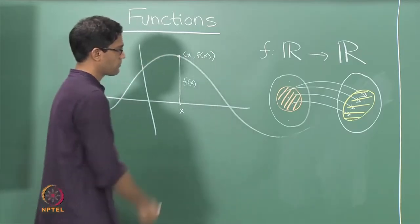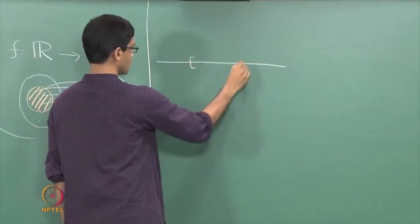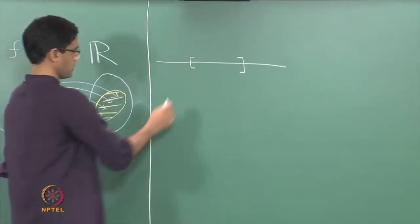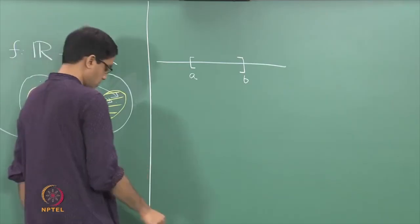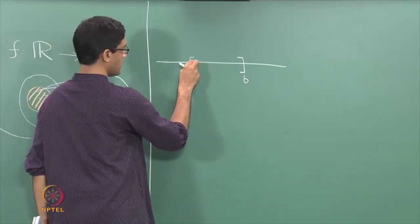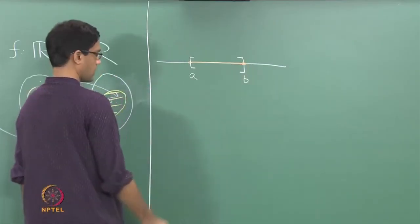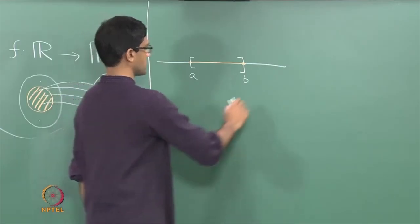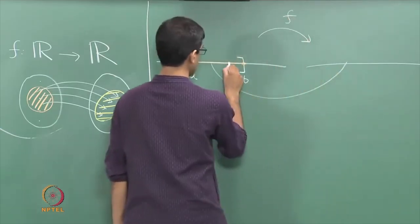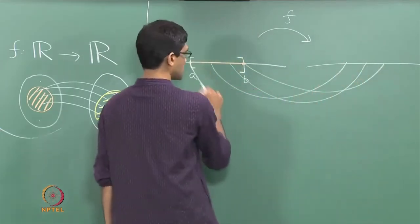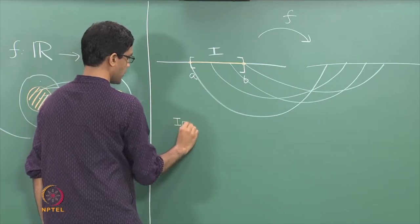Let us try and do this for the familiar function from the real numbers to the real numbers. The question we will ask is: what does a function typically do to an interval? I want to take a closed interval [a, b] — the set of all real numbers which lie between a and b, including the two endpoints. Now the question is: what are the images of the points in this interval under the function? If we call this interval I, the question is: what is the image of I under f?